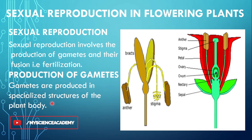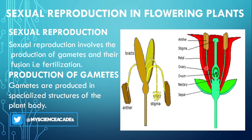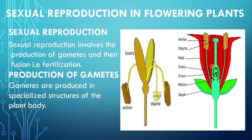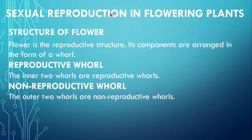Gametes are produced in specialized structures of the plant body. Plants mein kuch specialized structures present hote hain jahan pe male aur female gametes produce hote hain. Eggs aur sperm ki production ke liye plant body mein kuch khas qism ke structures present hote hain. Flowering plants mein sexual reproduction ko understand karne ke liye hamen pehle flower ka structure understand karna hoga.